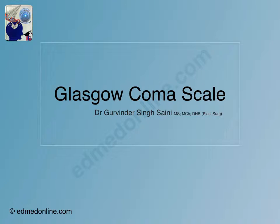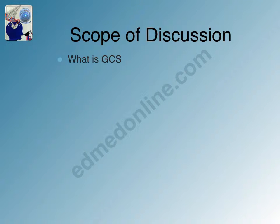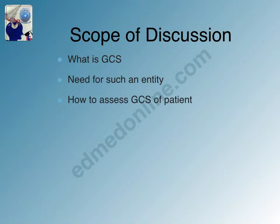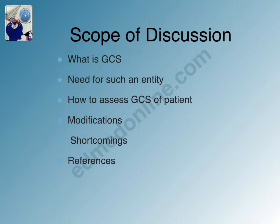Hi there, I am Gurwinder Singh and this talk is about a very common topic that all of us routinely encounter in our practice of trauma as well as certain other fields of medicine. We are discussing Glasgow Coma Scale, a scoring system used to assess neurological status. This discussion will describe what GCS is, the need for such a scoring system, how it is assessed, its modifications, shortcomings, and references.